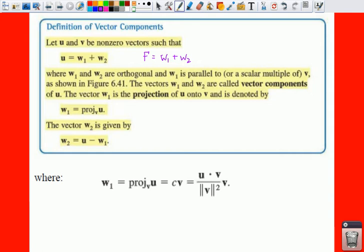W sub 1 and W sub 2 are orthogonal, and W sub 1 is parallel to your vector V. Your W sub 1 and W sub 2 are vector components of U. So your W sub 1 is your projection of U.